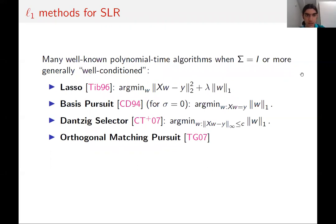This problem has been widely studied. There are many well-known polynomial-time algorithms when the covariance matrix sigma is either the identity or more generally well-conditioned. These algorithms include the lasso, basis pursuit, the Dantzig selector, and orthogonal matching pursuit. The first three are convex programs minimizing some L1 norm. Orthogonal matching pursuit is a greedy algorithm that iteratively selects new important variables. We'll focus on basis pursuit, minimizing the L1 norm subject to the linear constraints imposed by the data.